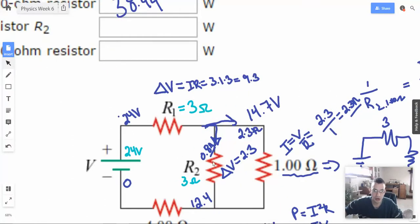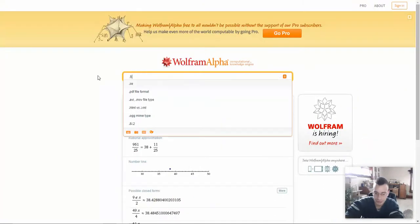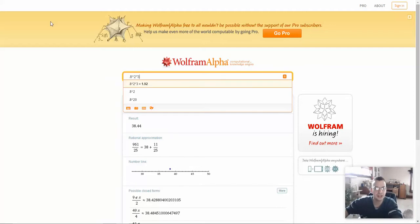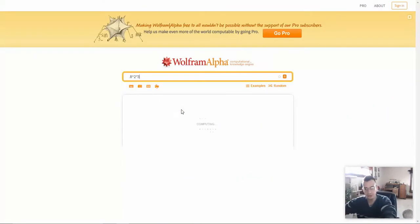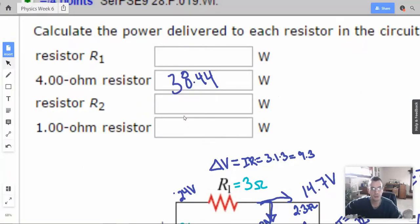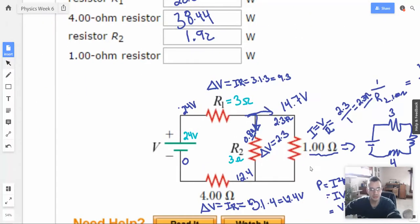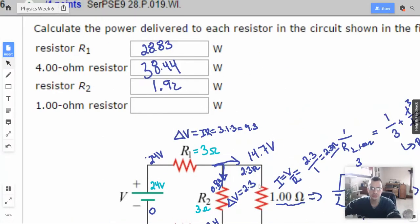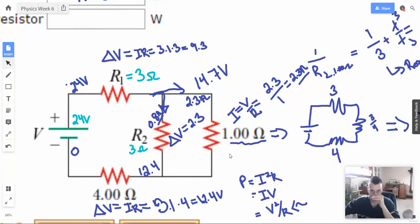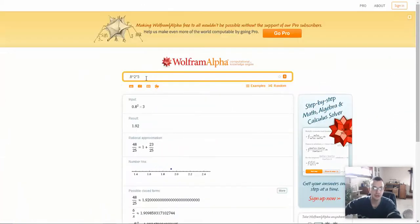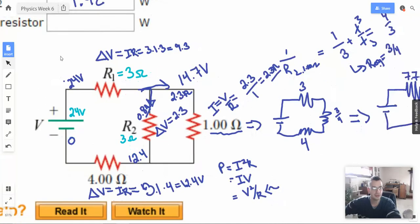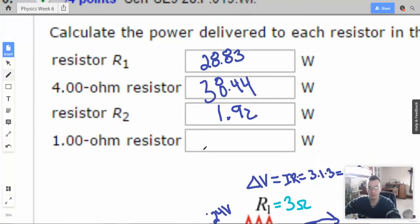So R2. All right. So R2, we have 0.8 amps. So 0.8 squared times 3. Is it 3 or is it 2? 3. So 0.8, 1.92. And then over here we have the 1. So it'll be I squared, which will be 2.3 squared. 2.3 squared times resistance, which is 1. 5.29. Oh, there we go. 5.29.